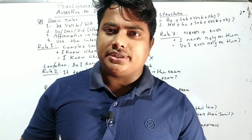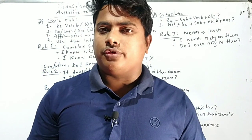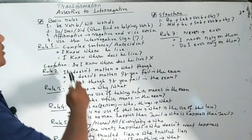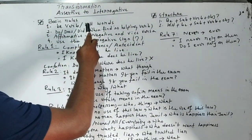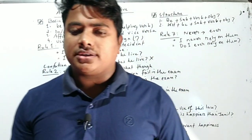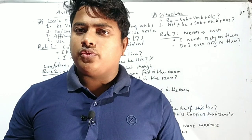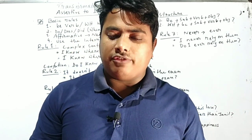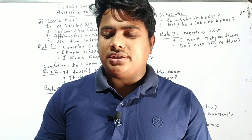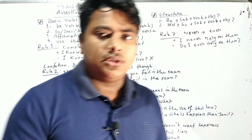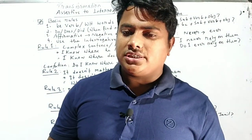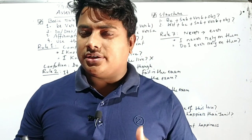Here you see the different basic rules. If you want to change an assertive or general sentence to an interrogative sentence, you have to follow some basic ideas. Interrogative sentences are sentences that ask or enquire about something. They start with a B-verb, helping verb, auxiliary verb, modal auxiliary verb, or sometimes a WH word.